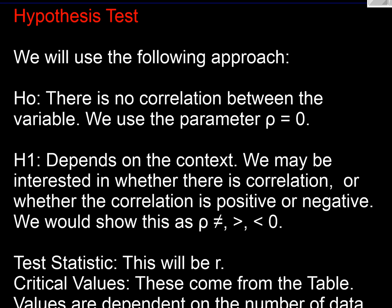Hypothesis testing for correlation. We're going to start with our null hypothesis is that there is no correlation between the variables. So our parameter, our rho, our correlation parameter is zero, and that's what Pearson did to calculate all his values. H1, well that depends on the context. We might be interested in whether there is just a correlation or whether the correlation is positive or negative. So our rho could be not equal to, greater than, or less than. Our test statistic is going to be our r, our correlation coefficient.